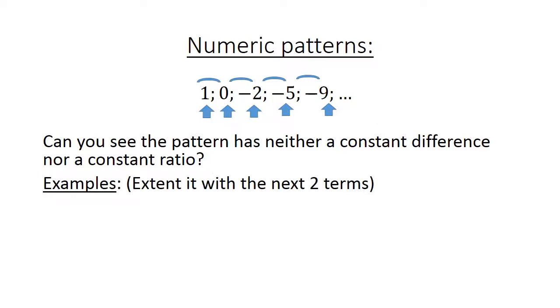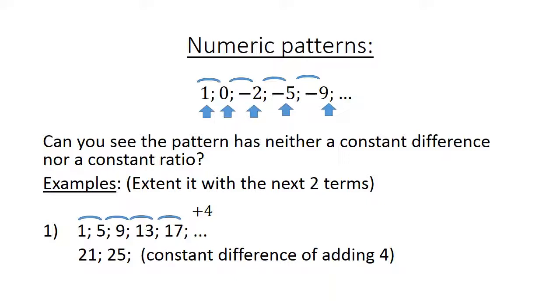Example: Extend the pattern with the next two terms. Number 1: 1, 5, 9, 13, 17. What happens from 1 to 5, then from 5 to 9, from 9 to 13, and from 13 to 17? We plus 4. So the next term will be 17 plus 4 equals 21, and then 21 plus 4 equals 25. A constant difference of adding 4.